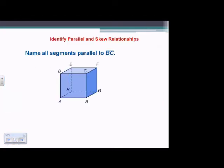Let's apply that to a couple of situations. The question says name all segments parallel to BC. We locate BC, and going around the box — same plane but never touching — we have AD, FG, and EH. All of those segments are parallel to BC, forming around the box, all in the same plane but never intersecting.